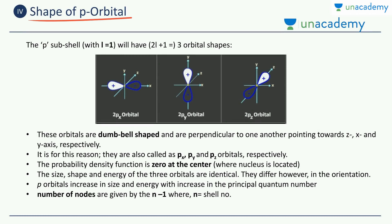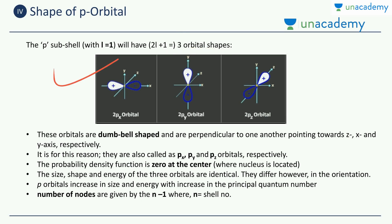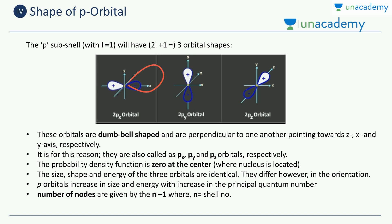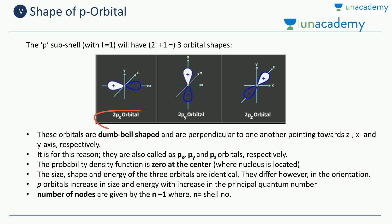Let's move on to the p orbitals. P has the azimuthal quantum number L equals to 1. Using the formula 2L plus 1, the number of orbitals is 3. These orbitals are dumbbell shaped, each having two lobes. They are perpendicular to one another, pointing toward the x, y, and z axes respectively, giving us the 2px, 2py, and 2pz orbitals. It is for this reason they are known by the names px, py, and pz orbitals.